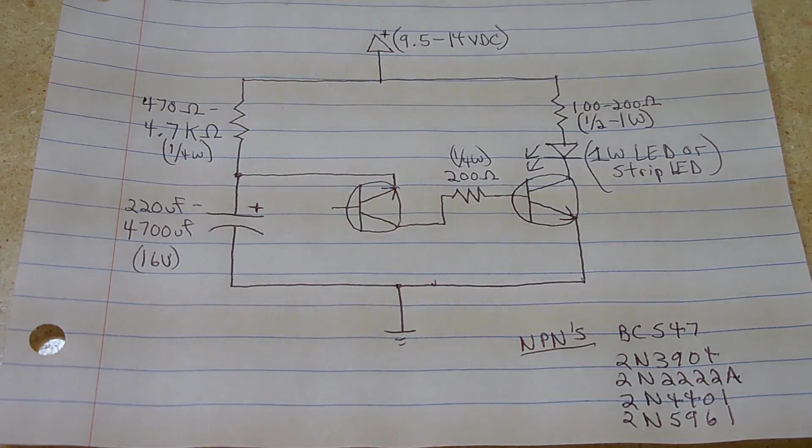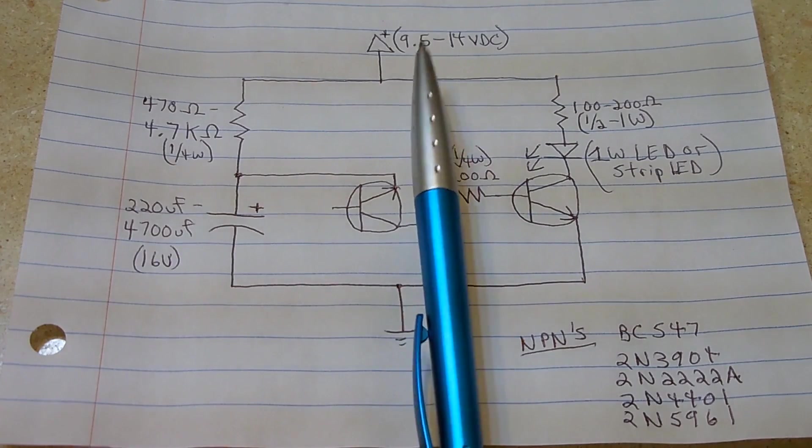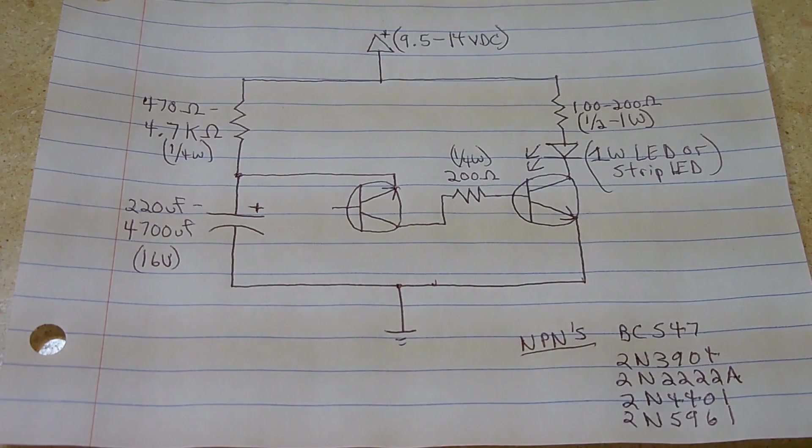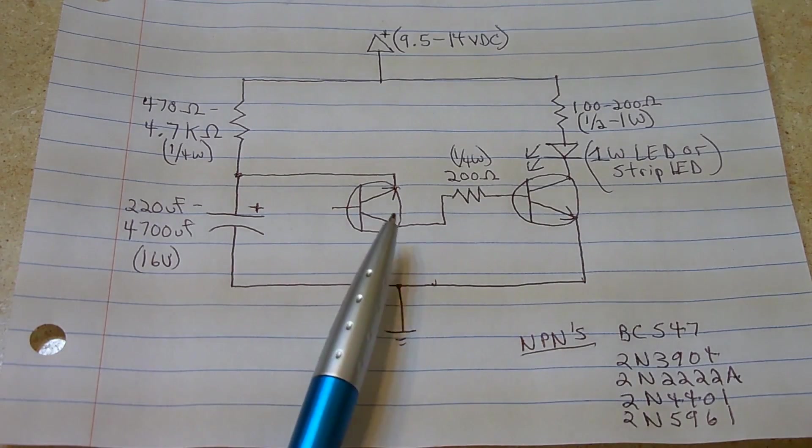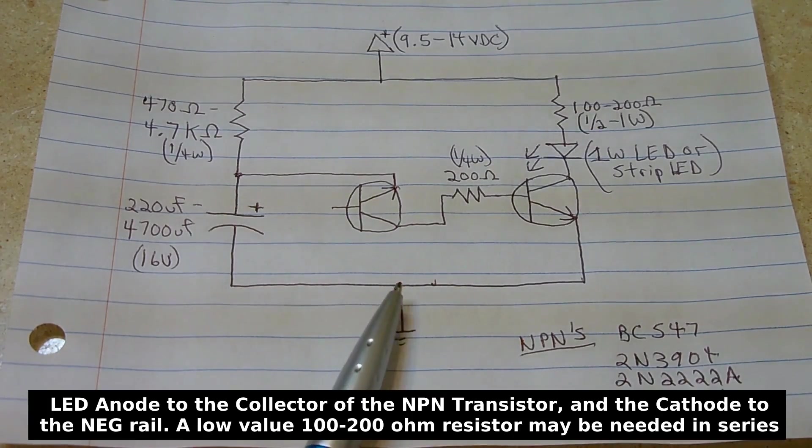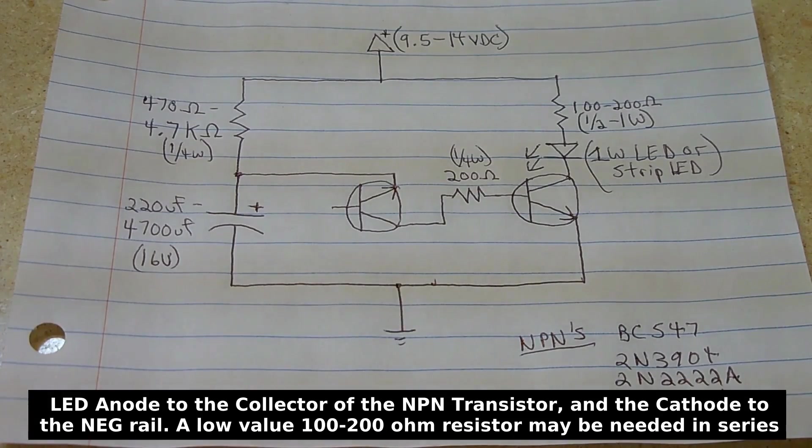For the lower current version, from the pen right here, all the way to the right, you wouldn't have any of that. You would take the Piranha LED, or any other ultra-bright LED, connect it to the collector, and then connect the other side to the negative rail.